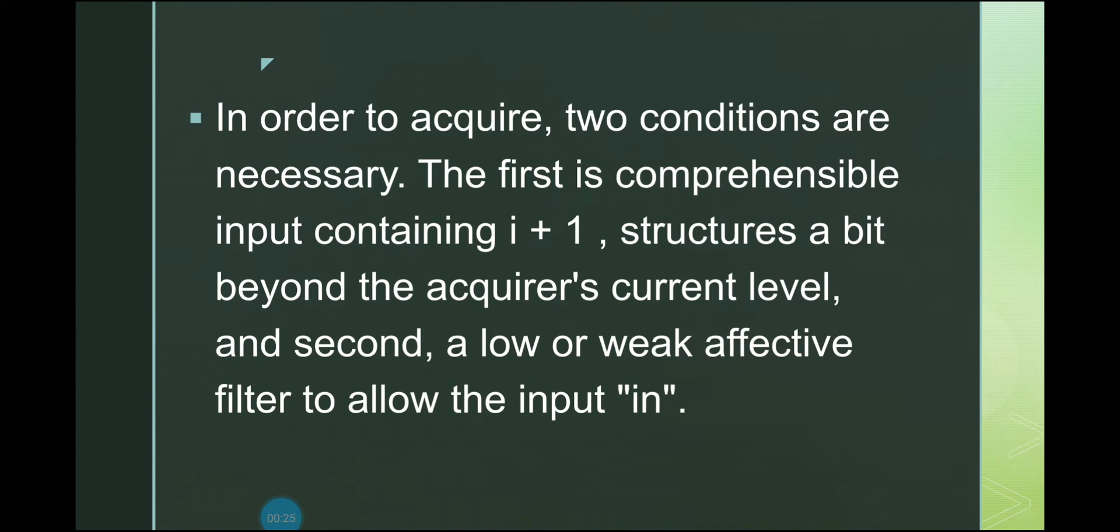In order to acquire this second language, two conditions are necessary. The first is comprehensible input containing i plus one, structures a bit beyond the acquirer's current level, and second, a low or weak affective filter to allow the input in.